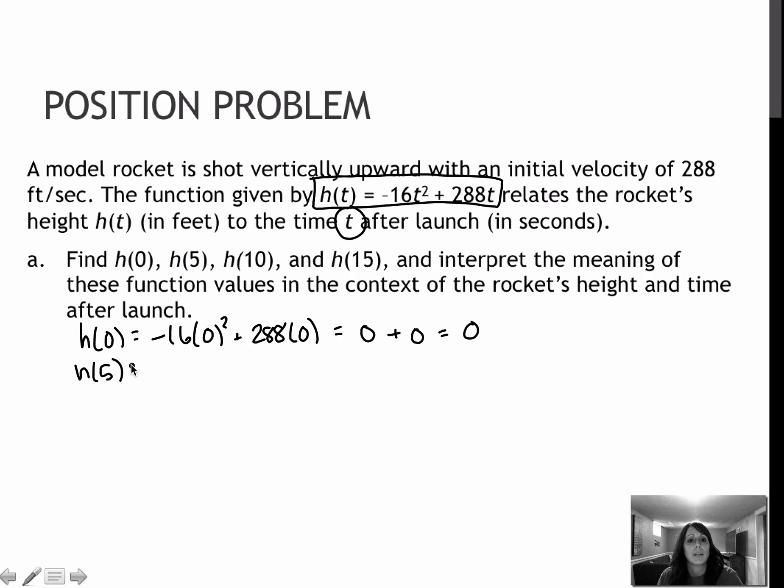Now I'm going to plug in 5. Again, 5 squared plus 288 times 5. When I multiply that, I get negative 400 and positive 1440, which leaves me with 1040. So at 5 seconds, the height of the rocket was 1040 feet.